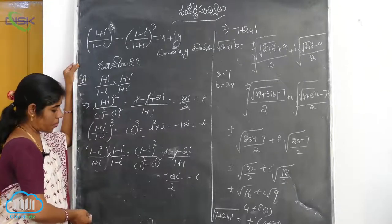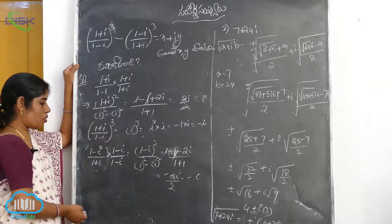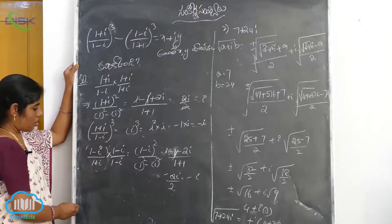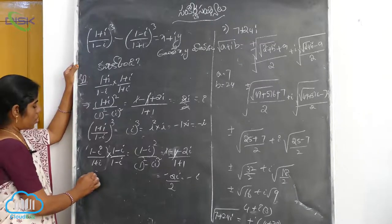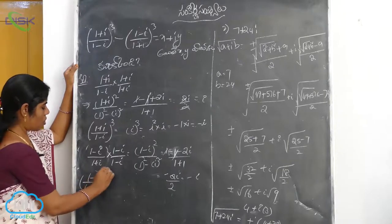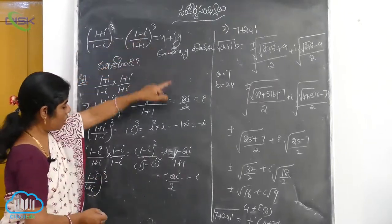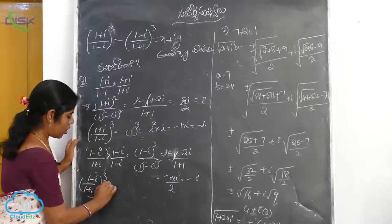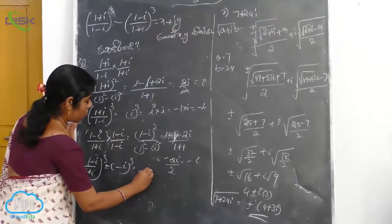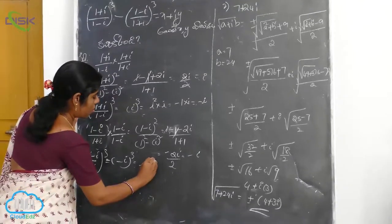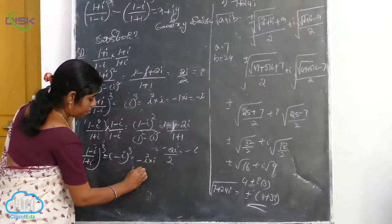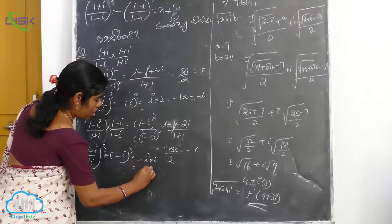So i cubed equals i² times i equals minus 1 times i equals minus i. And minus i cubed: minus i squared is minus 1, so minus of minus 1 into i gives plus i.